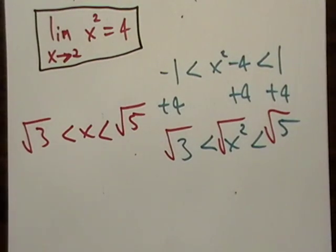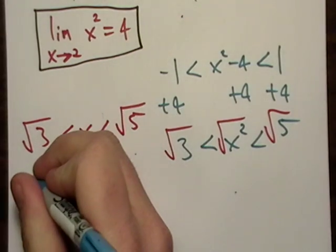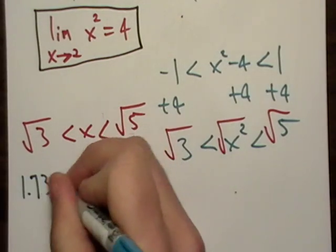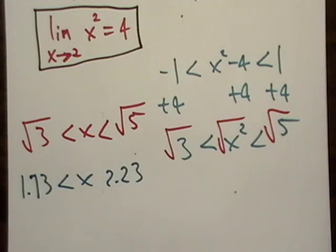Okay, so there I am. I've got a little interval. And just for your knowledge, this is 1.73. That's about 2.23. And we want to make sure that we're using radicals normally. But for instructional purposes, we're going to use decimals. That way you have a feel for what's going on here.